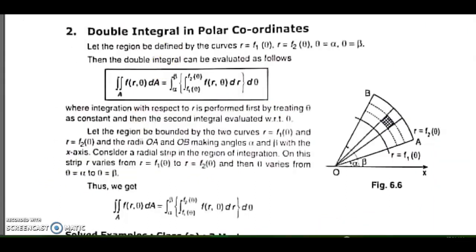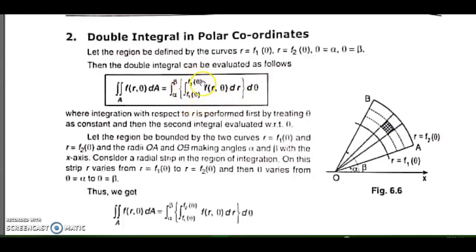Now in this lecture we will be targeting double integrals in polar coordinates. In polar coordinates, x is replaced by r cos θ, y is replaced by r sin θ, and dx dy is replaced by r dr dθ. Just like in Cartesian form we had a choice whether to solve for x or y first, but in polar we have to solve for r first and then θ. As θ limits are always constants, they are always the outer integral. Therefore, the first integral is always with respect to r and its limits are in terms of θ.